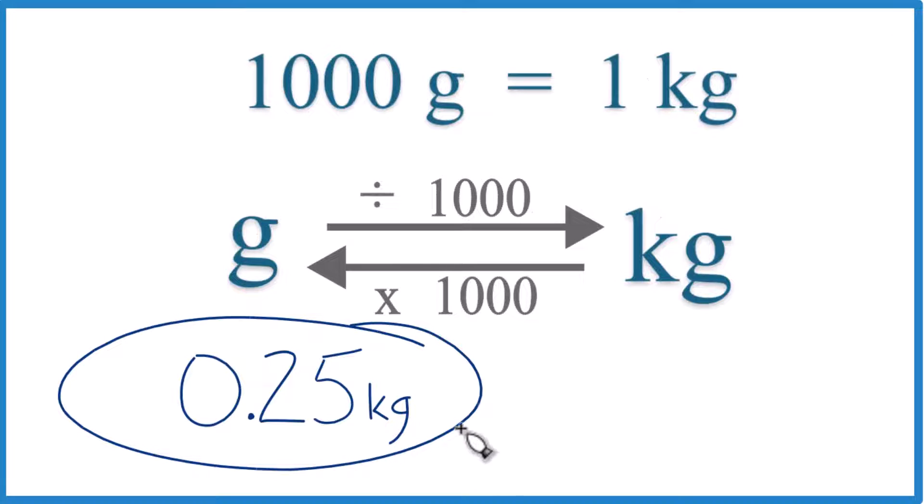Let's convert 0.25 kilograms to grams. When you're going from kilograms to grams or from grams to kilograms,